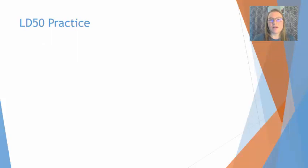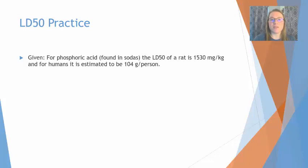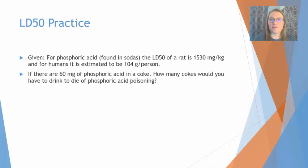Let's look at an example of how to calculate LD50. For phosphoric acid, which is found in sodas, the LD50 in rats is 1,530 milligrams per kilogram, and for humans it is estimated to be 104 grams per person. If there are 60 milligrams of phosphoric acid in a single can of Coca-Cola, how many cokes would you have to drink before dying of phosphoric acid poisoning?